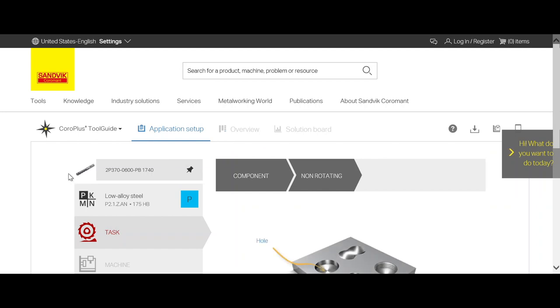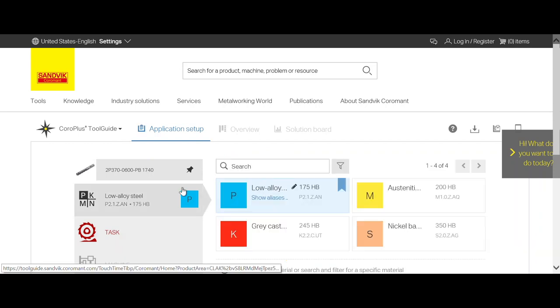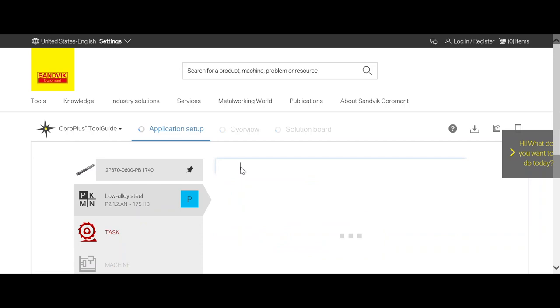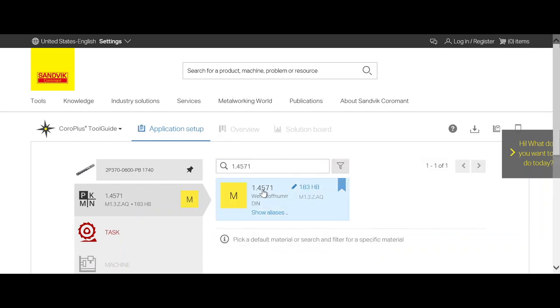We click on it and this will take us to Tool Guide. We see here our tool is pre-selected so it's pinned to our application. We move on by selecting our material and we have a stainless steel material.